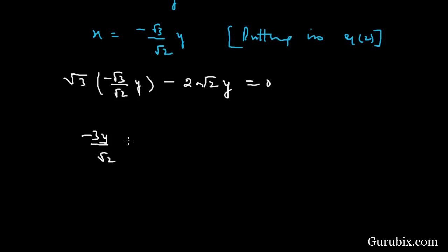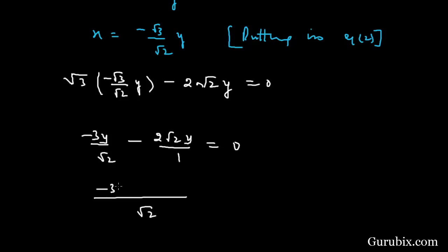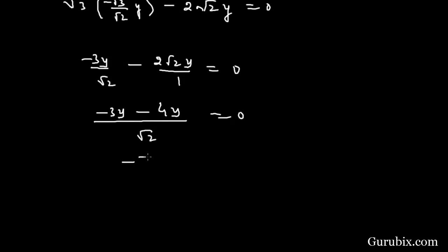Simplifying: minus root 3·y minus 4y over root 2 — combining terms gives minus root 3·y minus 4y, which simplifies to 7y equals 0 (after multiplying through by root 2). Therefore y equals 0.